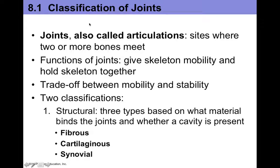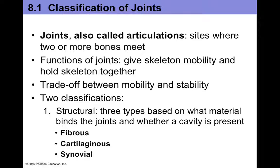In this video we're going to look at classifications of joints or articulations. An articulation means to connect. In the body, an articulation is a place where two or more bones meet to form a joint, and the functions of these joints are to basically help give the skeleton some mobility and stability.